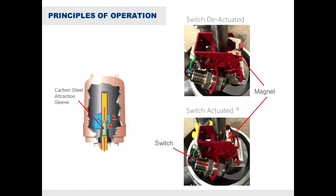The switching element inside the housing works like this: the attraction sleeve has carbon steel or magnetic material inside it, sitting inside the enclosing tube within the process. On the outside, you have the actual switching mechanism with a magnet that sits on the outside of the enclosing tube. When deactuated, that magnet is away from the tube. When actuated, the attraction sleeve goes up into the enclosing tube and interacts with that magnet, pulling it towards the enclosing tube to actuate a micro switch inside the housing.